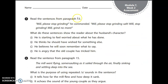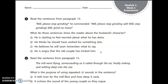Number five: read the sentences from paragraph thirteen — 'Mill, please stop grinding. Mill, please stop grinding salt. Mill, stop grinding. Mill, grind no more.' What do these sentences show the reader about the husband's character? A — he is starting to feel worried about what he has done. B — he thinks he should have wished for something else. C — he believes he will soon remember what to say. D — he is angry that the old couple has tricked him. This is showing that he is starting to feel worried about what he has done — starting to panic a little bit. So our answer is A.